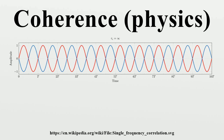Measurement of the spectral coherence of light requires a non-linear optical interferometer, such as an intensity optical correlator, frequency-resolved optical gating, or spectral phase interferometry for direct electric field reconstruction.